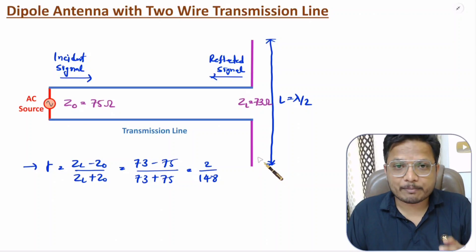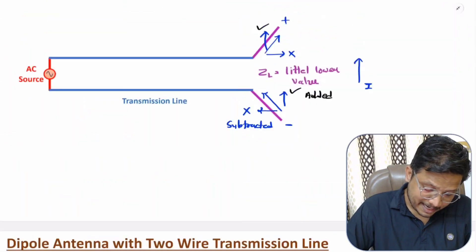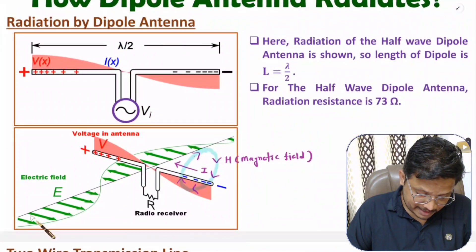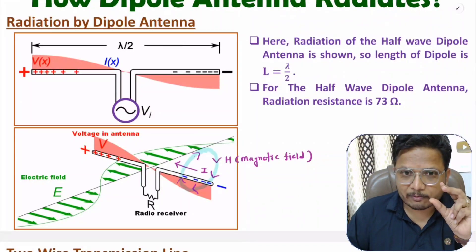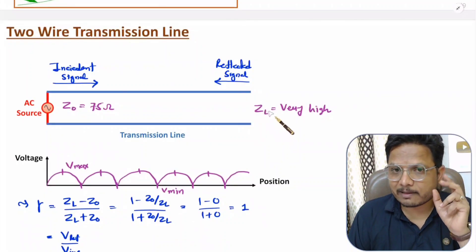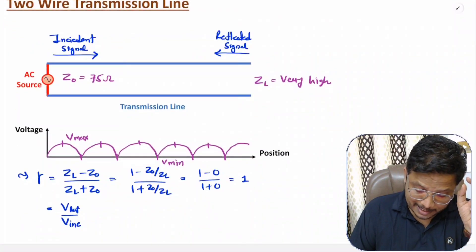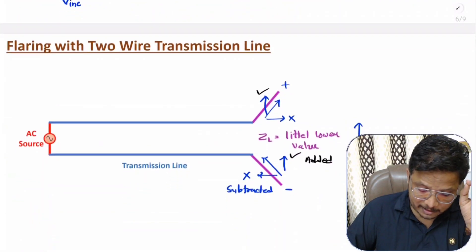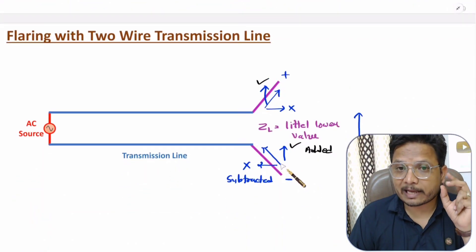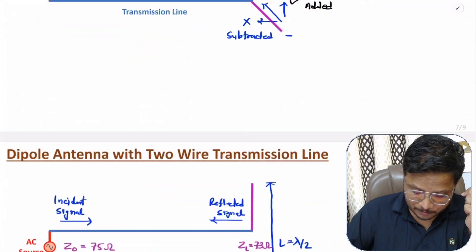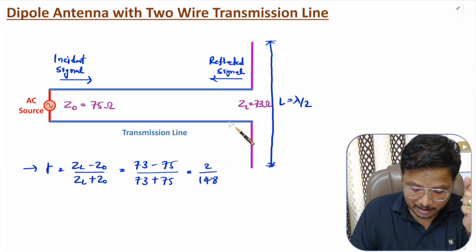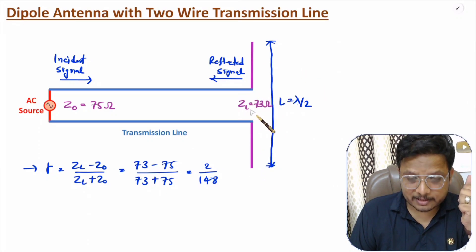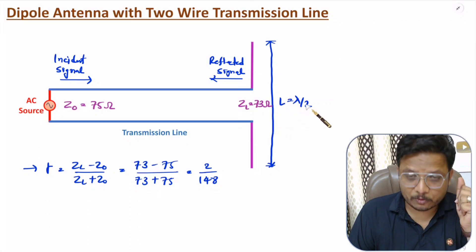Maximum signal is radiated by the 90-degree flaring, which is the dipole antenna. So the dipole antenna radiates because of flaring. With zero flaring, ZL is maximum, resulting in the highest reflection. As flaring increases, reflection reduces and radiation increases. With 90-degree flaring, reflected signal is minimal and maximum radiation happens by this dipole antenna, which has a radiation resistance of 73 ohms when the length equals lambda by 2.